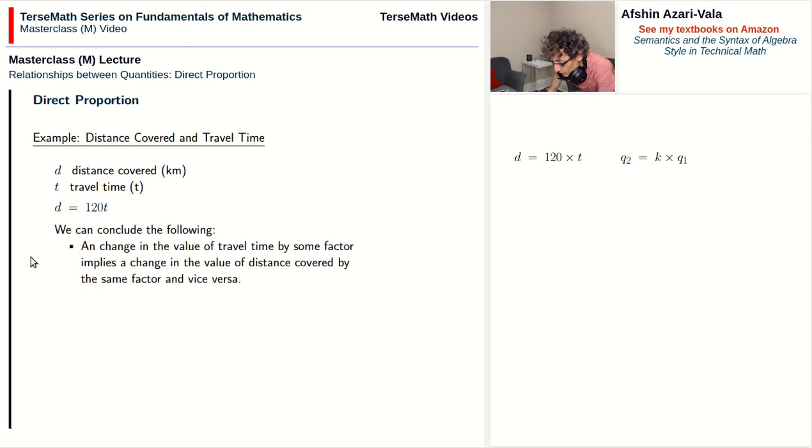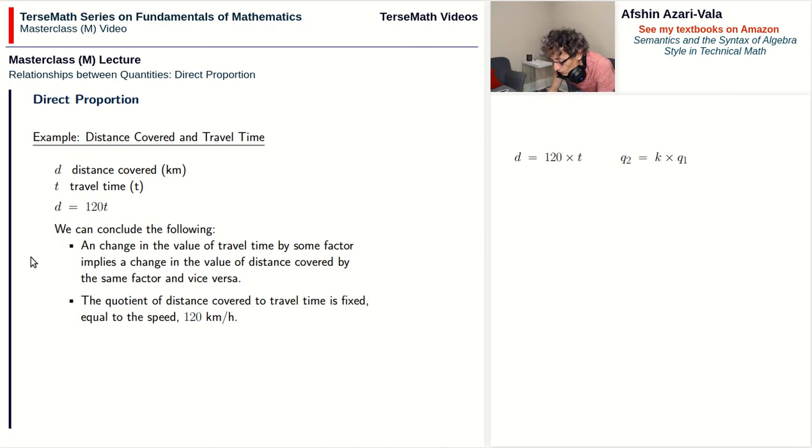And if I can tell that the relationship between d and t is direct proportion, then I can conclude the following. I can multiply the time, double the time, and at the same speed I will cover twice the distance. If I drive for half as long, I will cover half the distance. If I cover three times the distance, then that means I travel three times as long. I can also say, based on the conservation form, that the quotient of distance and time is fixed, and it's equal to the speed: 120 kilometers per hour.